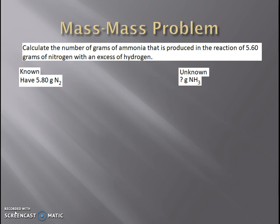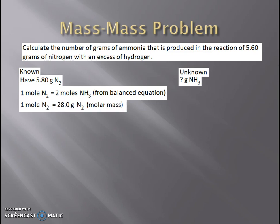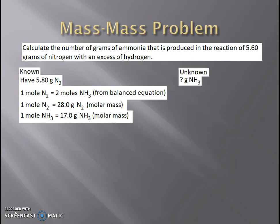How can I relate nitrogen to ammonia? Again, the only way is with the balanced chemical equation: for every one mole of nitrogen that reacts, two moles of ammonia are formed. However, my known is 5.6 grams of nitrogen, not moles of nitrogen. So I've got to convert those grams of nitrogen into moles using the molar mass. Since nitrogen is diatomic N₂, the atomic mass of 14 times 2 gives 28 grams of nitrogen per mole. I also want grams of ammonia as my final answer, so I'll need the molar mass of ammonia — nitrogen is 14 plus three hydrogens at 1 each gives 17 grams of ammonia per mole of ammonia. That's the difficult part: analyzing the problem to figure out what information you need.